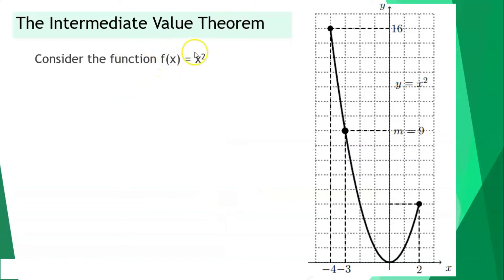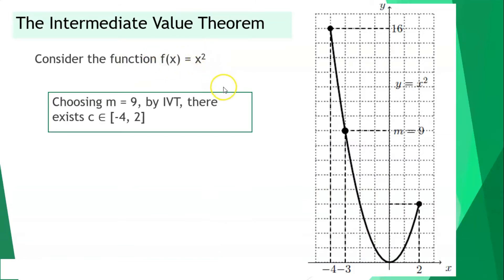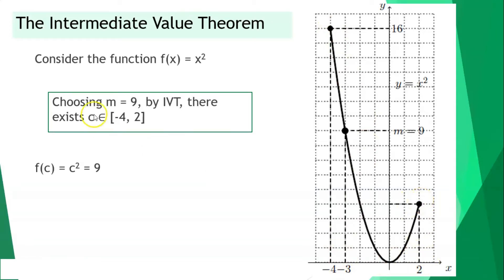Considering the function f of x is equal to x squared with the interval from negative 4 until positive 2. This is our graph from negative 4 until positive 2. If our x is negative 4, the value for y is positive 16. If our x is positive 2, the value for y is positive 4. Choosing m as 9. By IVT, there should be a value of c which is within negative 4 until positive 2.